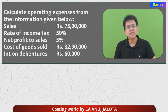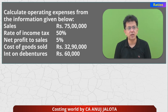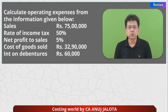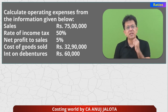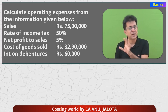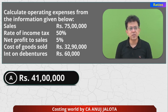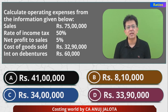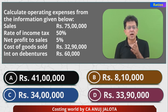The question for today: please calculate operating expenses from the information given below. Sales is 75 lakhs, rate of income tax is 50%, net profit to sales is 5%, cost of goods sold is 32,90,000, interest on debentures is 60,000. We need to calculate the balancing figure — operating expenses, which means admin and S&D expenses. The four options are: 41 lakhs, 8 lakh 10,000, 34 lakhs, and lastly 33,90,000.